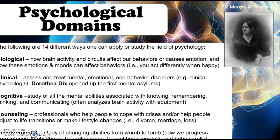First, biological — how brain activity and circuits affect our behavior or cause emotion, and then how emotions and mood affect behavior. For example, if you are in a great mood and turn on a comedy, you'll laugh harder. If you're in a bad mood and turn on a comedy, you're not going to be very happy or laugh at all. So your emotions and mood affect how you behave.